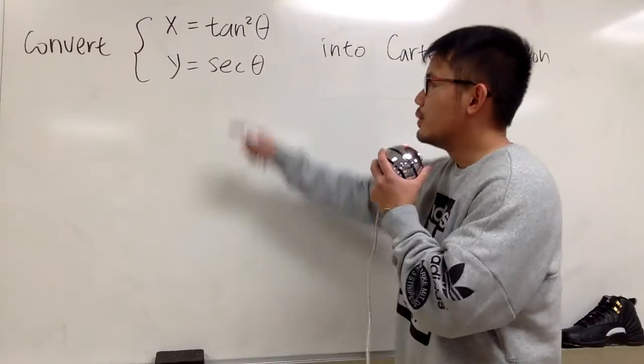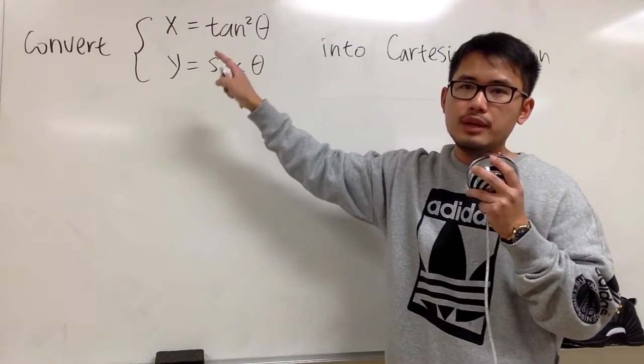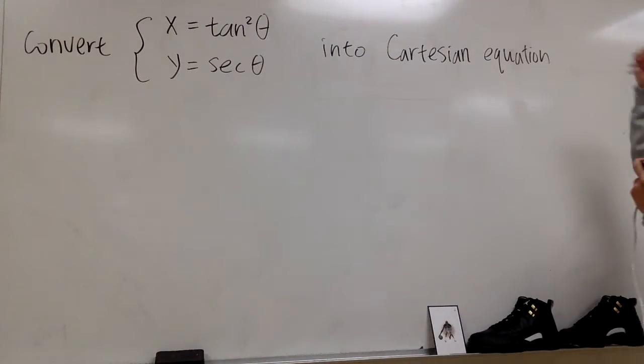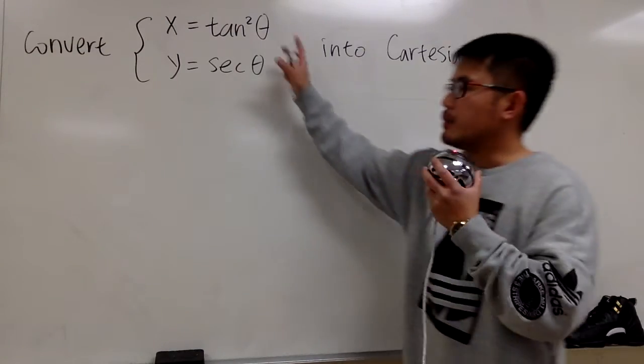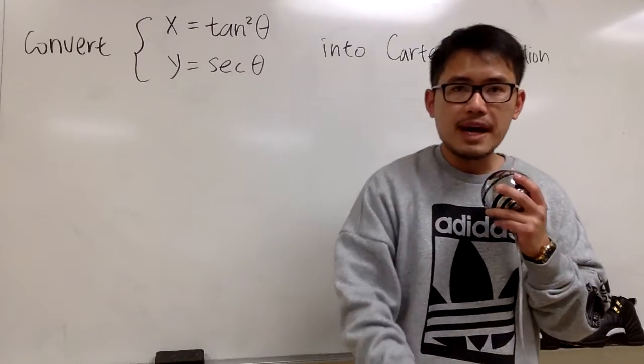Let's look at another one. We have x equals tangent squared theta, and the other equation is y equals secant theta, and I want to take this into the Cartesian equation. So I want to combine these two equations to just get one equation in terms of x and y.